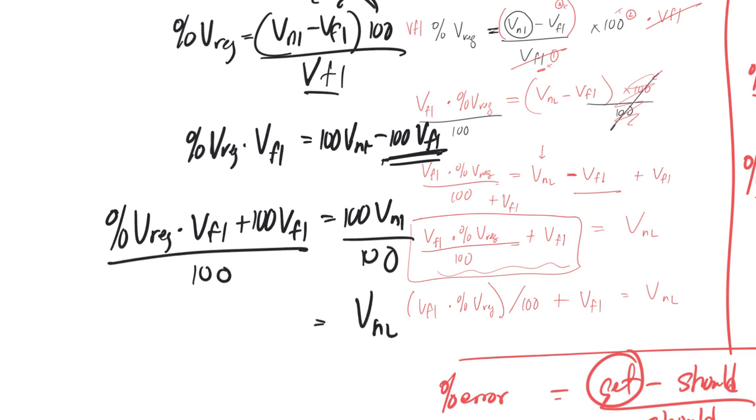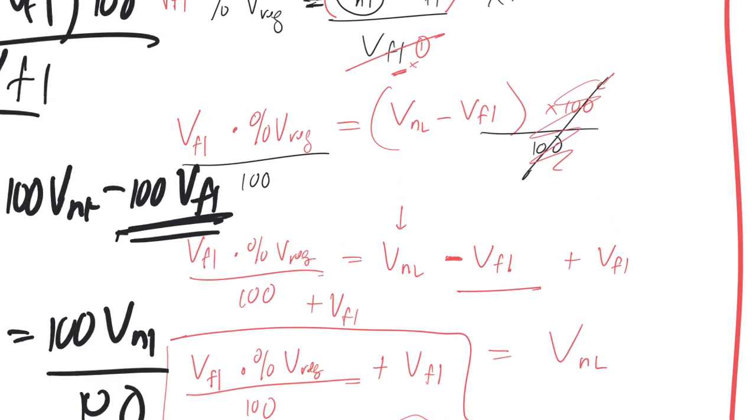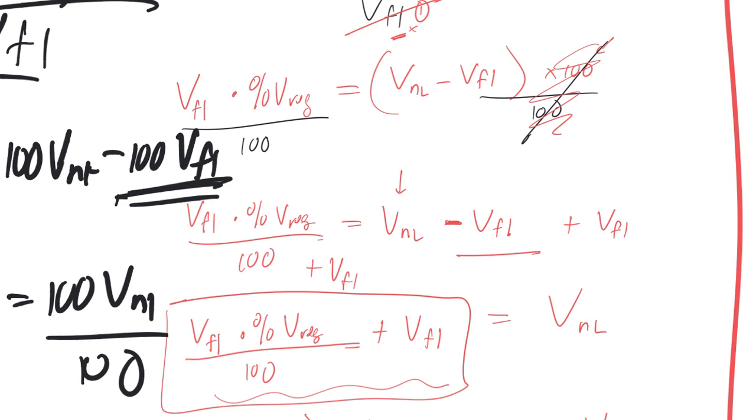So divide by 100 and divide all this by 100. So VNL is equal to percent V times VFL plus 100 FL all over 100. You could do that. I think the way I did it is a little bit better. Anyway, let me know if that makes sense.